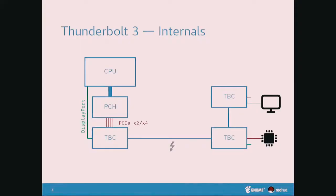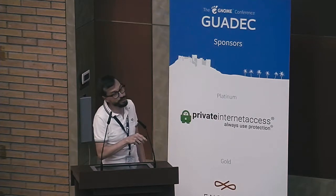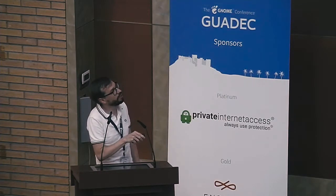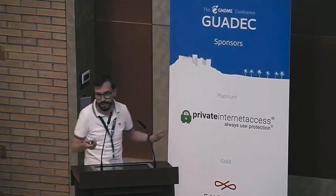On the physical level, there is a Thunderbolt controller chip connected with up to four lanes of PCI Express to the platform controller hub. It also gets DisplayPort input from your integrated GPU, or if you have a discrete GPU, it can also feed into this. Then it bundles everything into one Thunderbolt cable. On the client side, there's another Thunderbolt controller in device mode, where you unpack either the PCI stream for an external GPU or the DisplayPort stream.